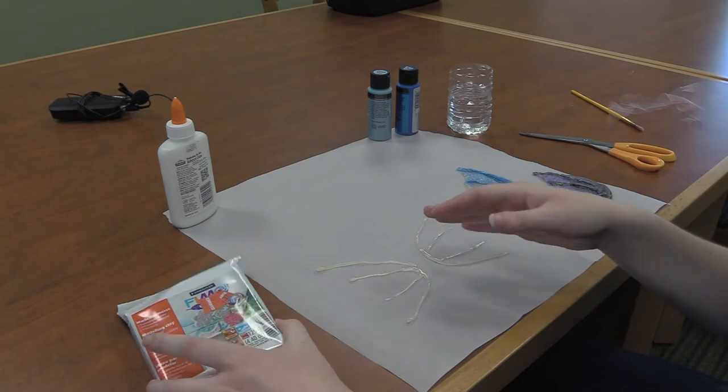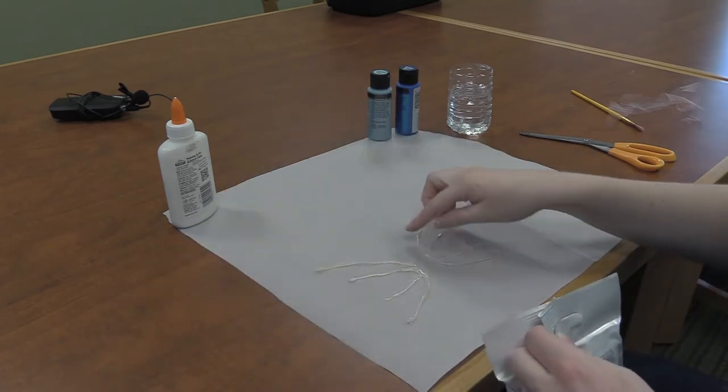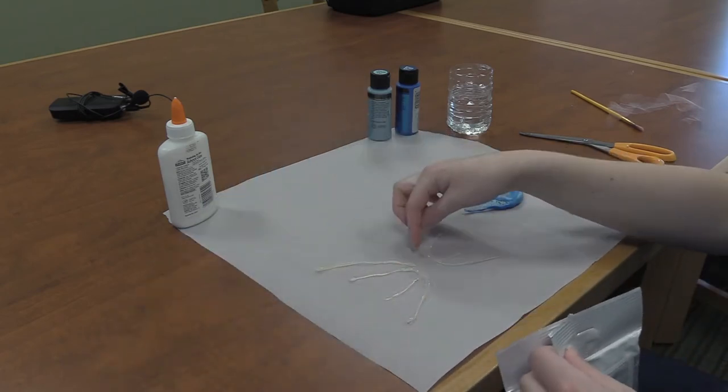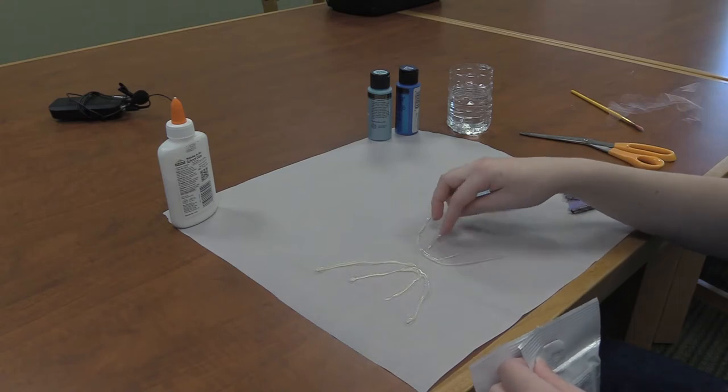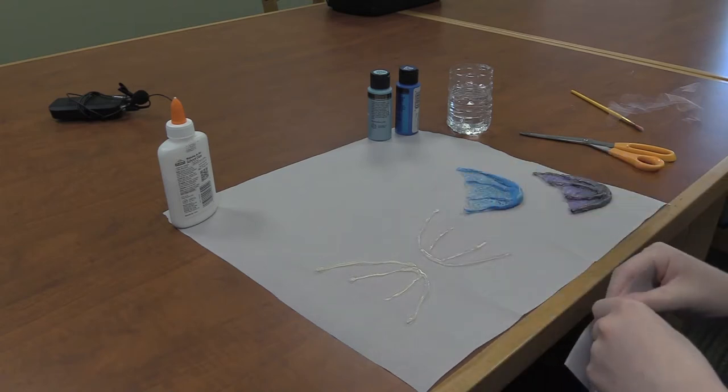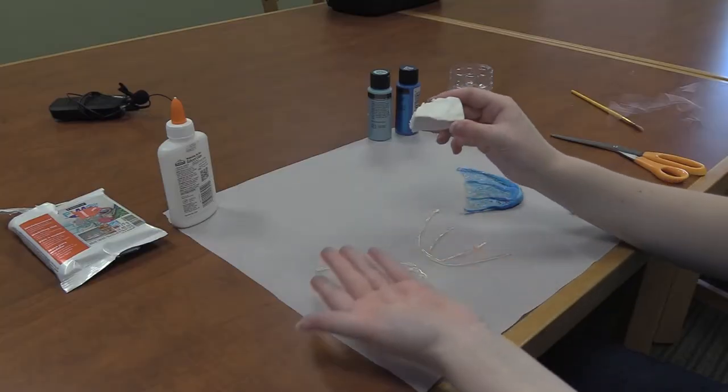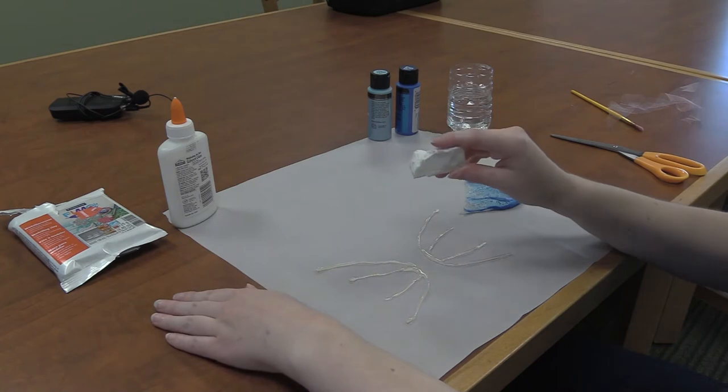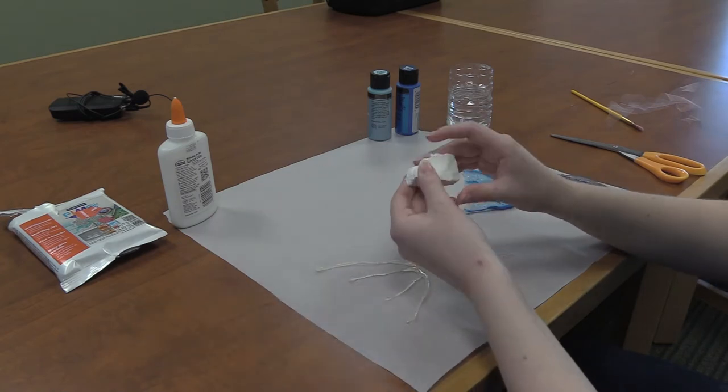After we get everything cut out, we're going to take our clay and start building up the center and towards the noodley bits, so that's totally not what they're called. I'm just using some Fimo I got from clearance, but any type of air dry clay will work fine.